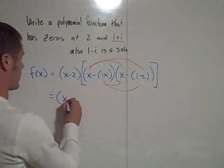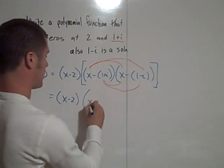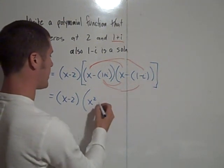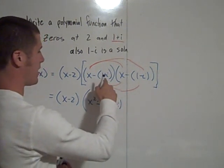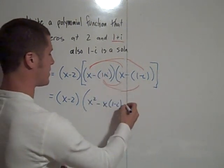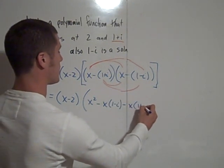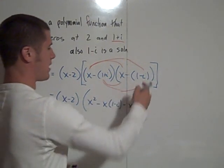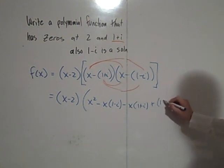So we have x minus 2 out front, and then x times x, x squared, x times a negative (1 minus i) is negative x times (1 minus i). And then negative (1 plus i) times negative (1 minus i), that's positive (1 plus i)(1 minus i).